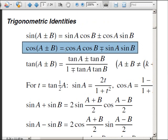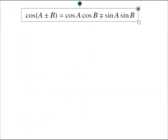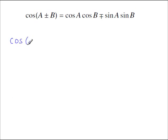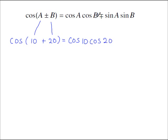Moving on to the cosine compound angle identity from the formula book: cos A plus or minus B. For example, cos(10 + 20) — A is 10, B is 20 — gives cos 10 cos 20. Be careful with the signs: the plus on the top goes with a minus, so we subtract sine 10 sine 20.